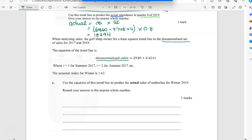Use the equation of the trend line to predict the actual sales of umbrellas for winter 2019. So because we've got 2019 and they said summer 2017 was the first quarter, so when you go to 2019 this is actually quarter 11. And why do I need that? Because even though I'm going to use the actual formula, that's the question.